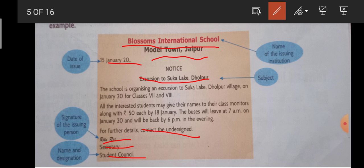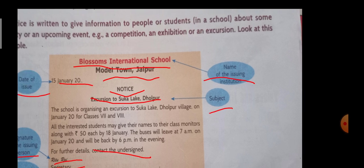So you can see here: name of the institution, subject, the notice title written in capital letters, date of issue, signature of the person, and name and designation of the person. This is what you have to remember.